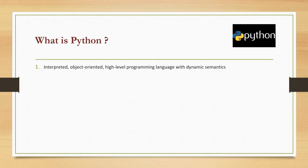The first point: Python is an interpreted, object-oriented, high-level programming language with dynamic semantics. When you write Python code, it gets interpreted directly. It's not like Java, where you write code, it gets converted into bytecode, and then the bytecode is interpreted. With Python, you write code with the .py extension and directly run the source code itself.